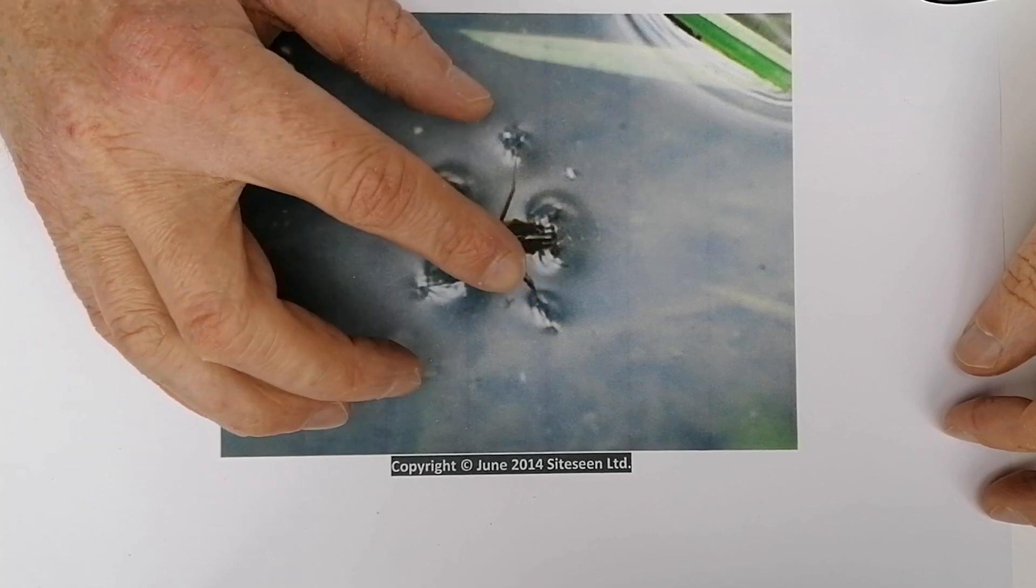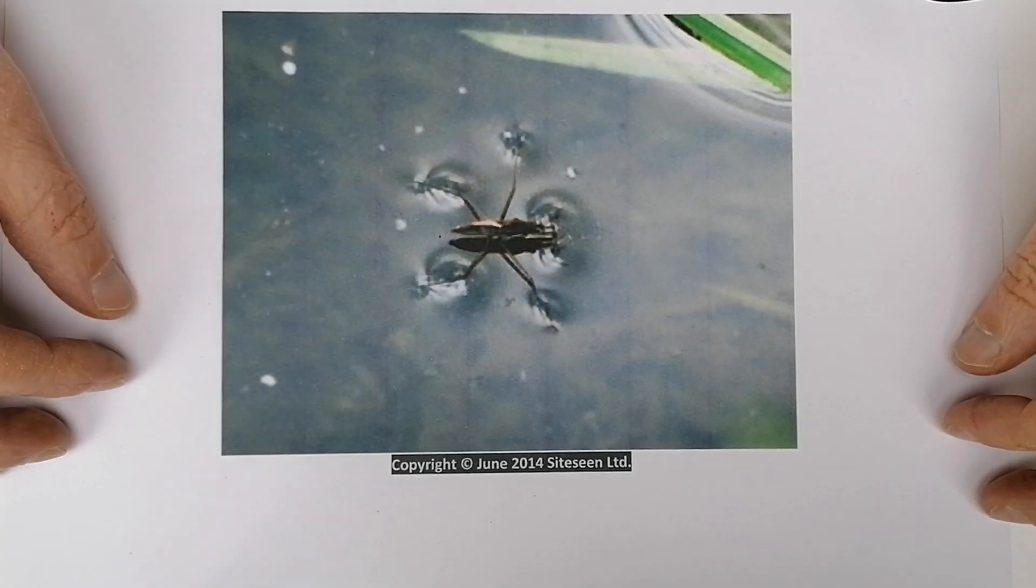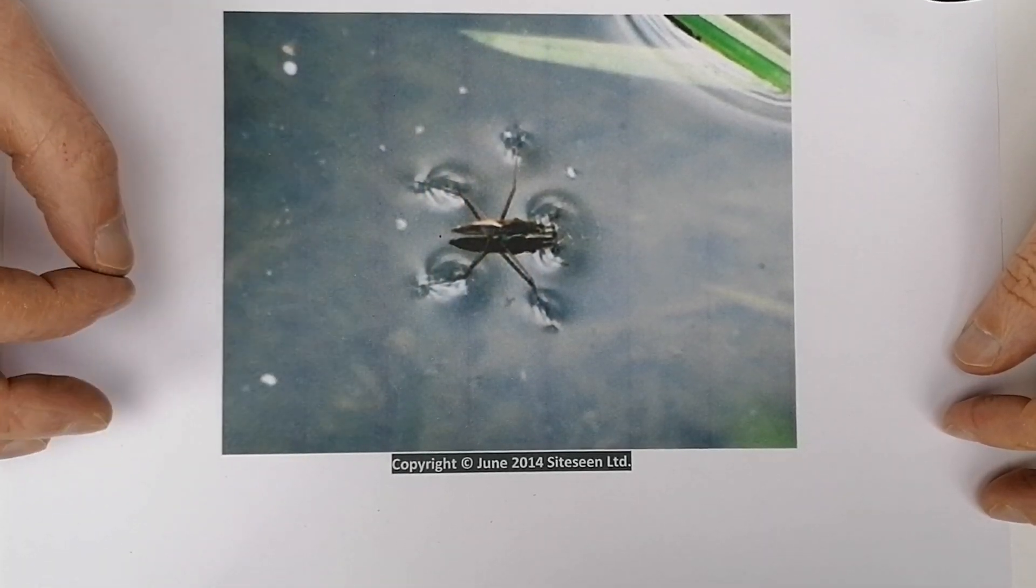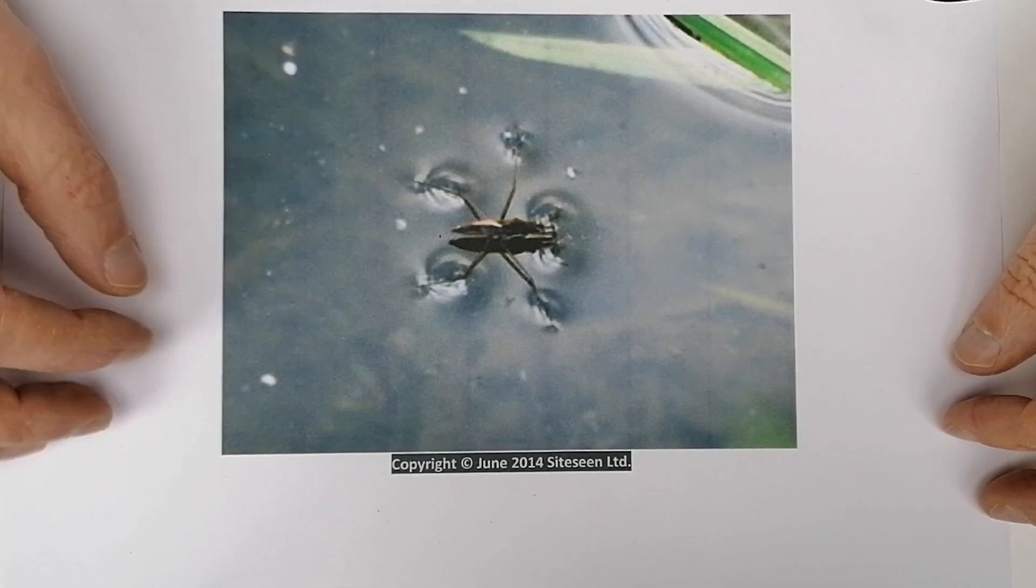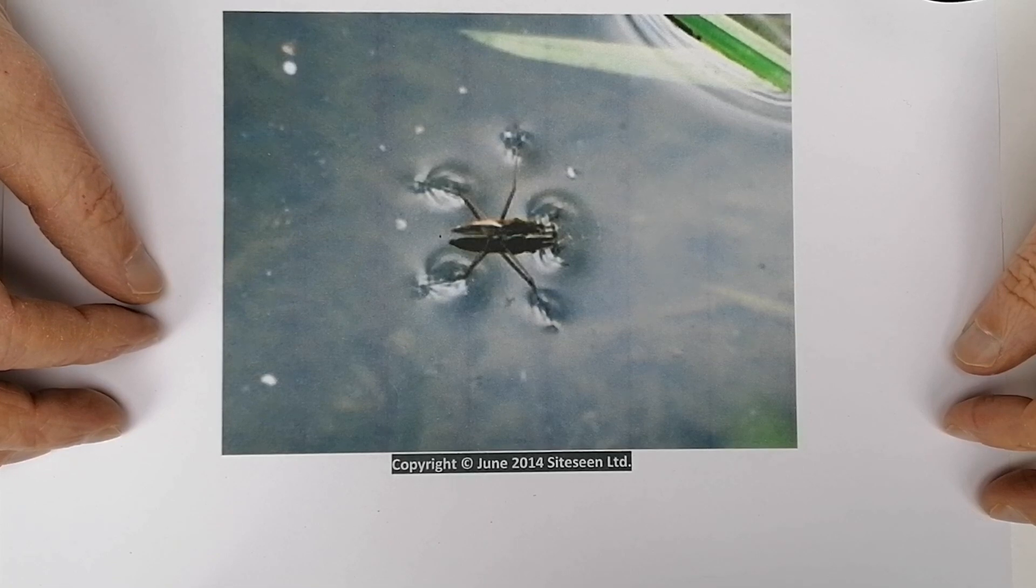It has six legs, and it uses these middle two legs to propel it over the surface of the water to catch insects. It can go about one meter per second, and if this was a person, that would be about 400 kilometers an hour.